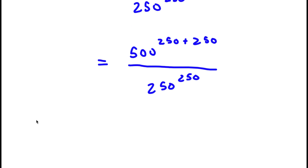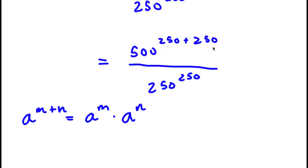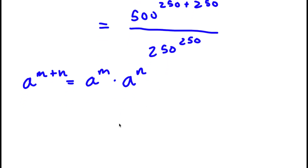If I have something in the form A to the power of M plus N, this is simply equal to A to the power of M times A to the power of N. So in this case, 500 to the power of 250 plus 250 equals 500 to the power of 250 times 500 to the power of 250.